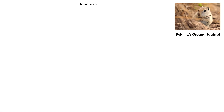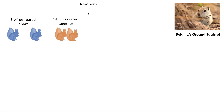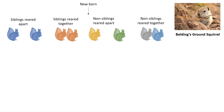The newborns of the Belding's ground squirrel are divided into four groups. The first group is siblings reared apart. The second group consists of siblings reared together. The third group consists of non-siblings reared apart, and the fourth group consists of non-siblings reared together. The experiment was conducted on these four groups.